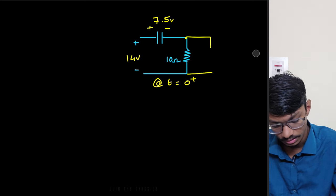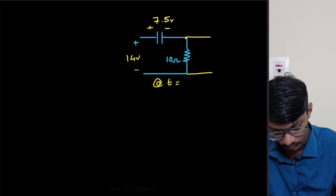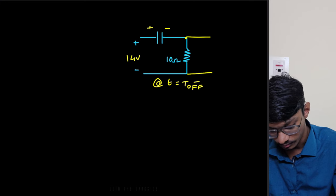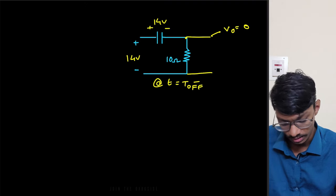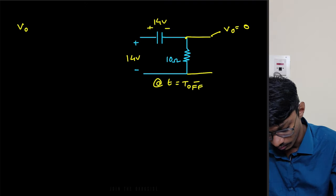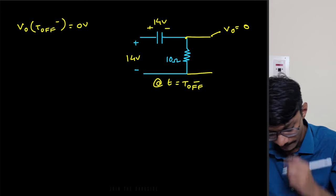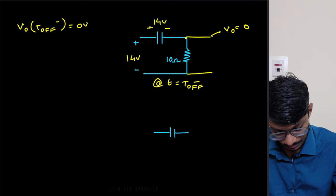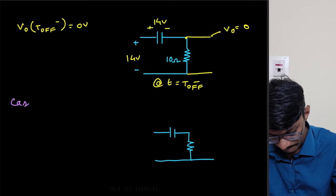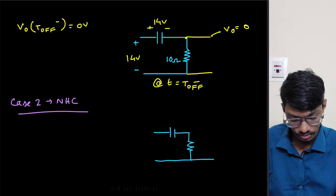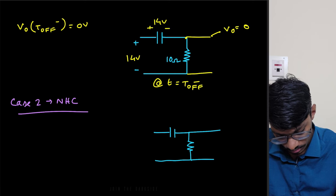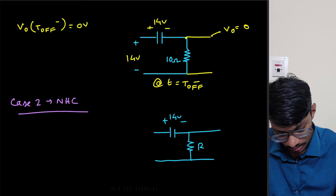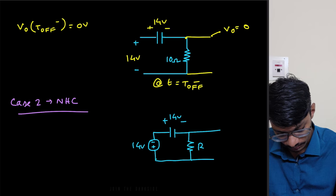So just before t = T/2, the output voltage Vo(T/2−) = 0 volts and the capacitor has been charged to 14 volts. Now we enter case two: the negative half cycle. At this moment, we have the capacitor holding 14 volts, the resistor R, the voltage source now at −14 volts, plus the diode and zener diode in the circuit.